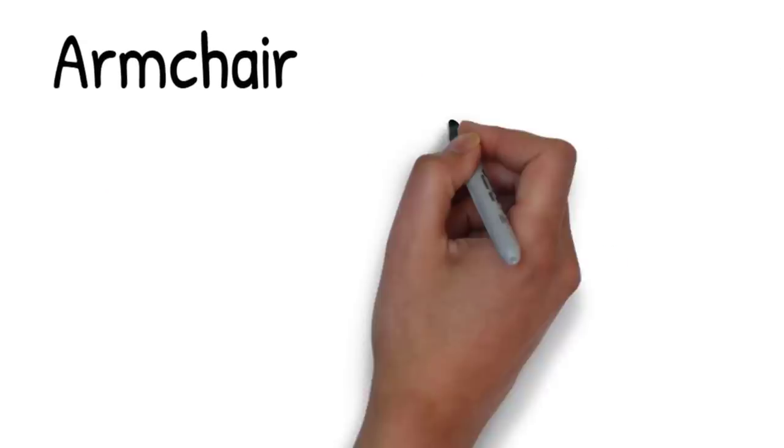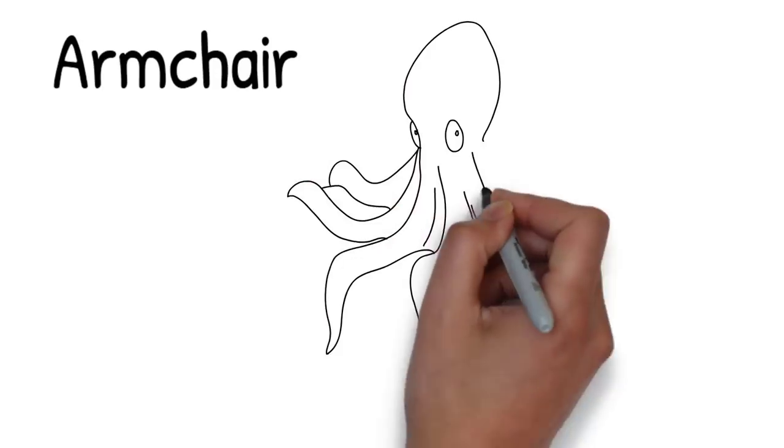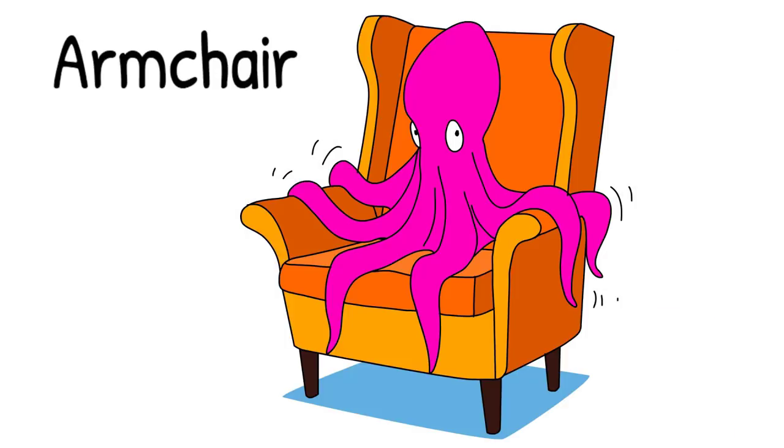The octopus staggers around and then collapses into a large comfortable armchair. The armchair isn't really designed for an octopus so there are octopus legs hanging over it everywhere.